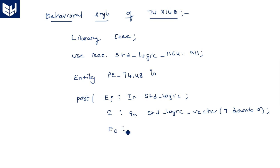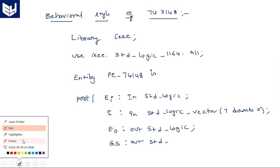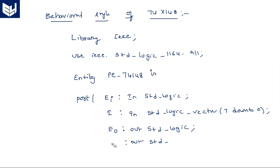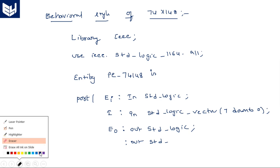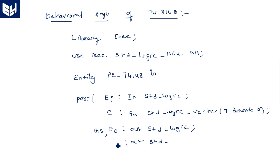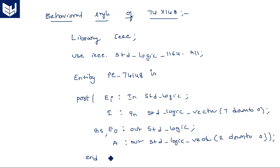The enable output EO is also a single-bit std_logic, and group select GS is also a single-bit output. Since they are the same size, you can write these two — group_select and enable_output — on one line. And A_out is std_logic_vector of two downto zero. These are all the inputs and outputs. End priority_encoder_74148.